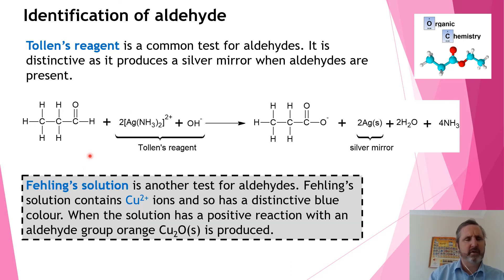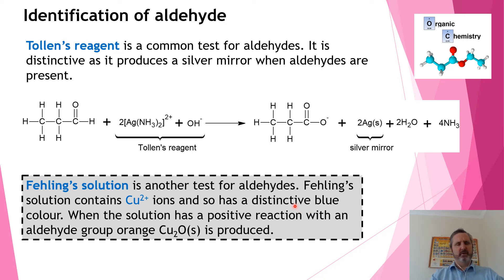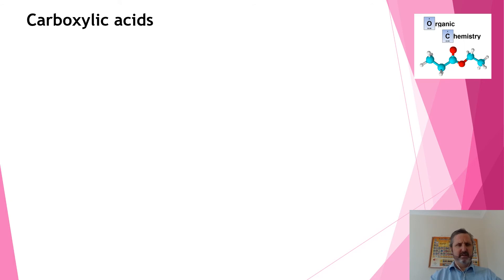We can also use something called Fehling's solution. Fehling's solution contains copper 2+ ions. It is blue in color, and when it reacts with an aldehyde, it turns to an orange color.